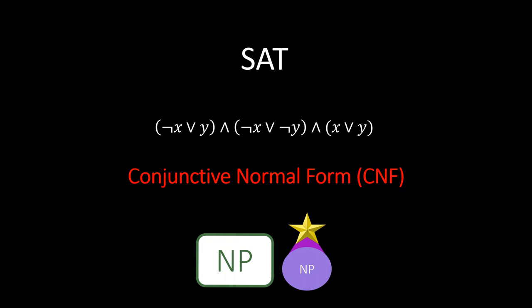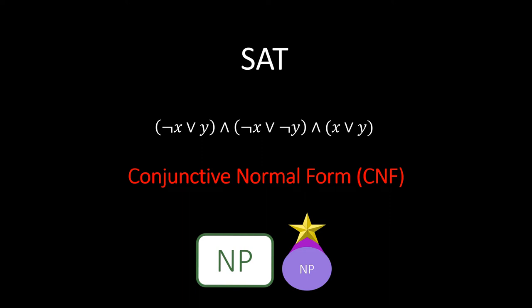That is, an efficient algorithm for SAT would yield an efficient solution to any problem in NP. This was proven in the 1970s, independently by Stephen Cook and Leonid Levin. SAT was the first problem to be proven NP-complete. For many, this marked the dawn of modern complexity theory.